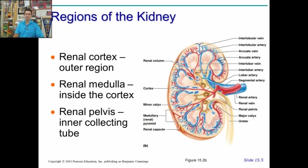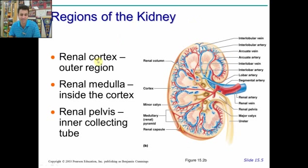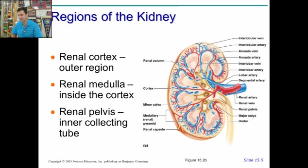It holds the kidney in place. Each kidney, if you do a cross section, you would see inside there are two regions: there's the outer region called the cortex, and there's the inner region called the medulla. All the urine that gets produced is collected in the calices and a collecting tube — the ureter — to take the urine off to the bladder.